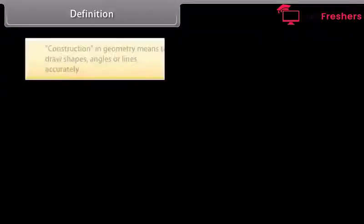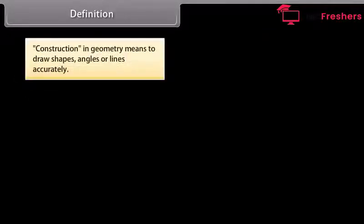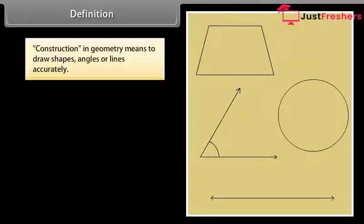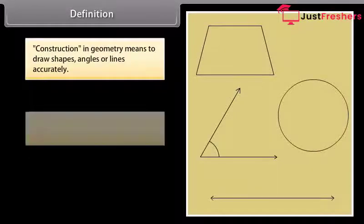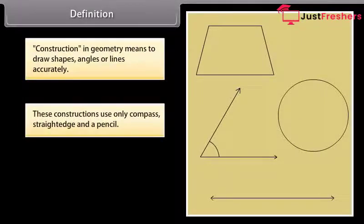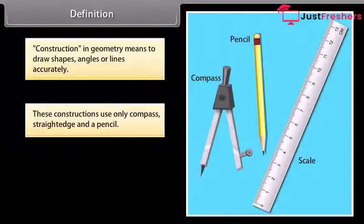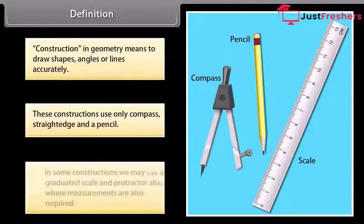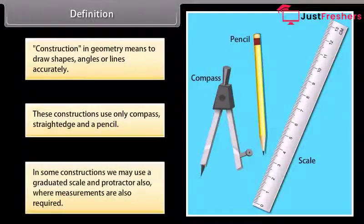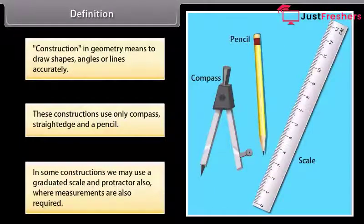Construction in geometry means to draw shapes, angles or lines accurately. These constructions use only compass, straight edge, i.e. ruler and a pencil. In some constructions, we may also use a graduated scale and protractor, where measurements are also required.